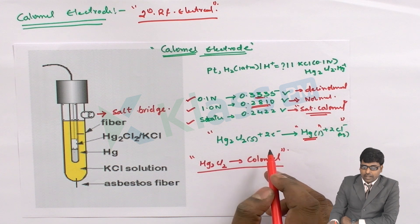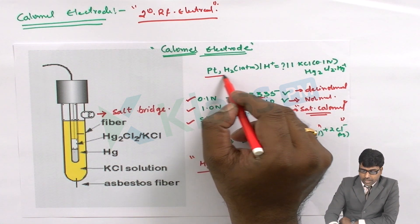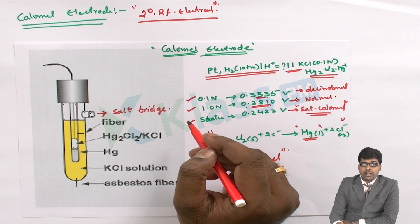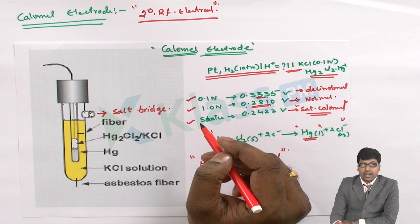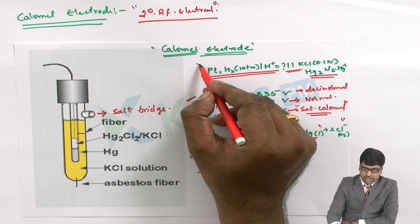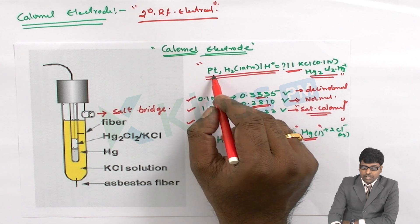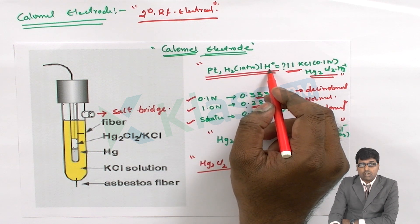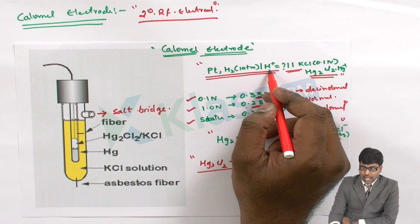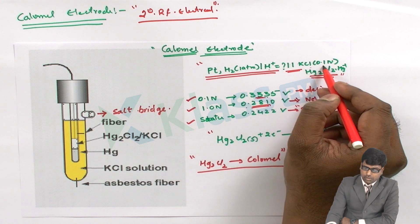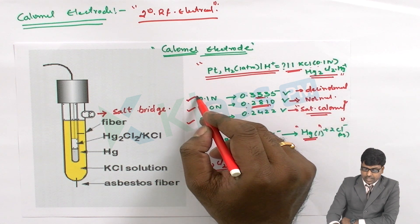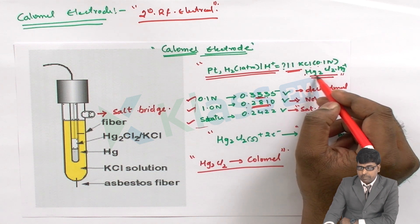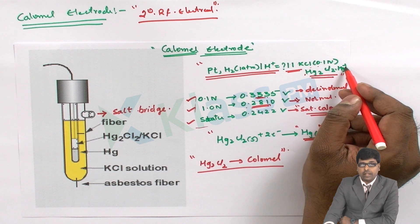The cell notation of the Calomel electrode when connected to the hydrogen electrode is as follows. The Calomel electrode acts as the cathode and the hydrogen electrode, whose solution concentration is to be known, acts as the anode. The cell representation is: Pt, H2(g) at 1 atm | H⁺ (unknown concentration) || KCl solution | Hg2Cl2(s) | Hg.